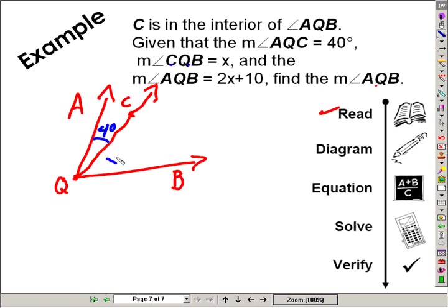CQB is x. This will be an unknown degree. AQB, the entire picture, 2x plus 10. Now that we see a diagram, we can relate it to what we just learned, the angle addition postulate.